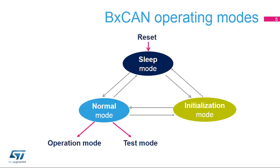The BX CAN has three main operating modes: initialization, normal, and sleep. After a hardware reset, the BX CAN is in sleep mode, which operates at a lower power.